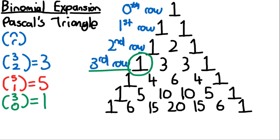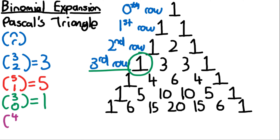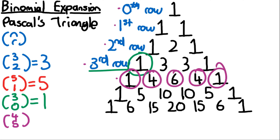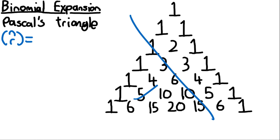r must be less than n, otherwise the value won't exist. For example, (4,5): the fourth row is rows zero through four, and five across would go outside Pascal's triangle — there is no value there. So (4,5) is an error — it doesn't exist.